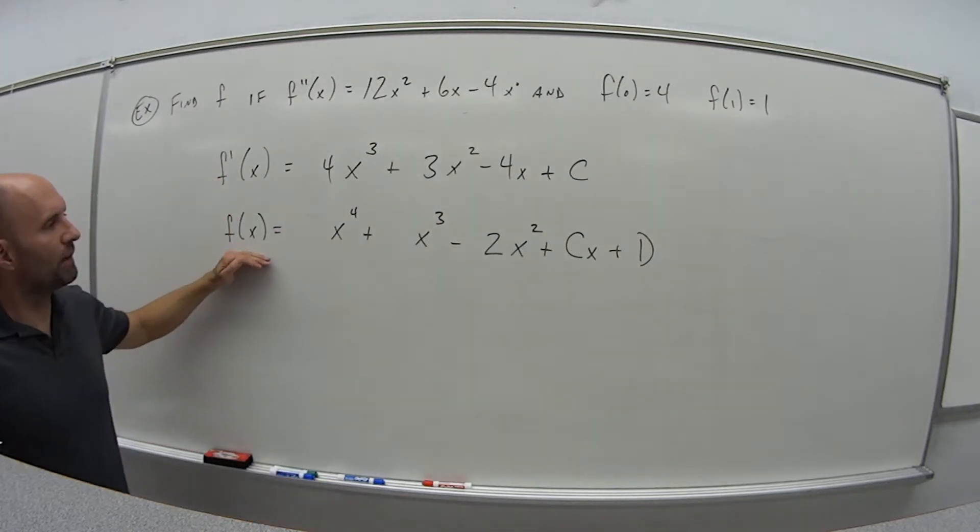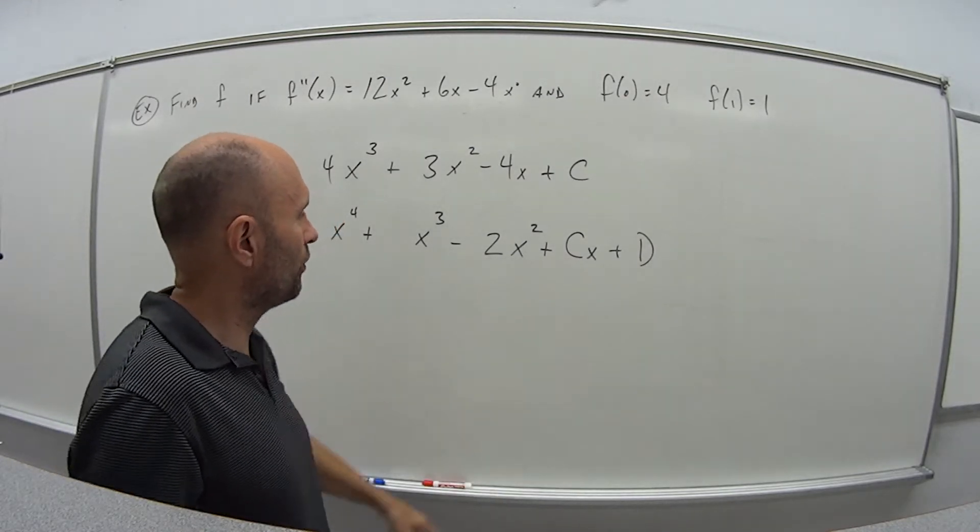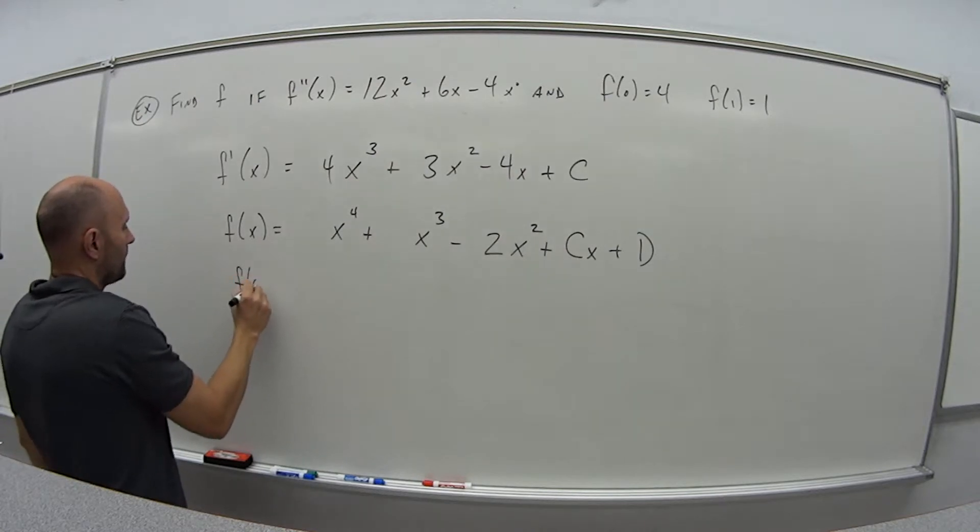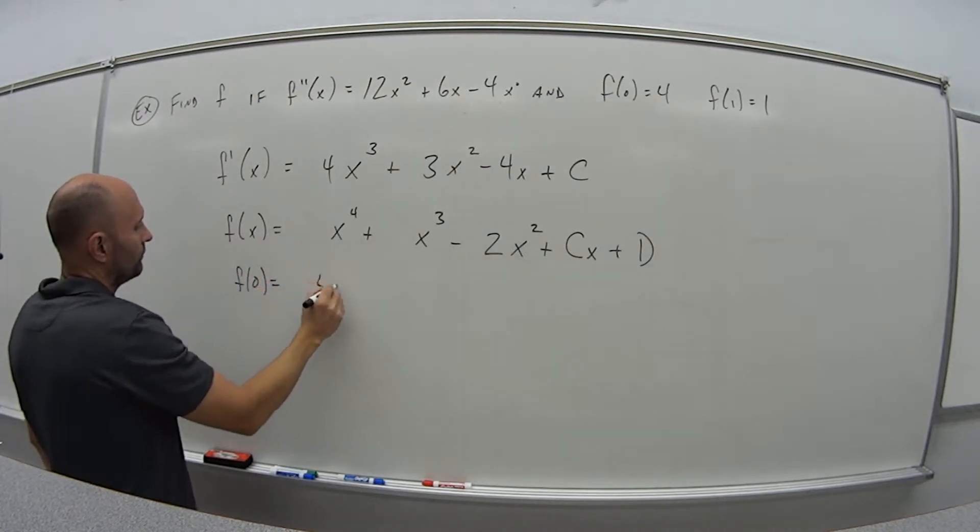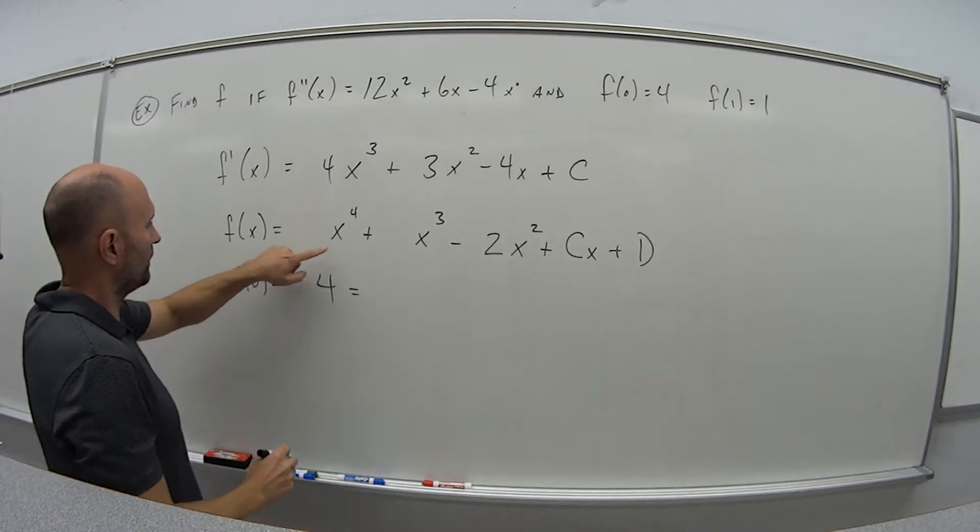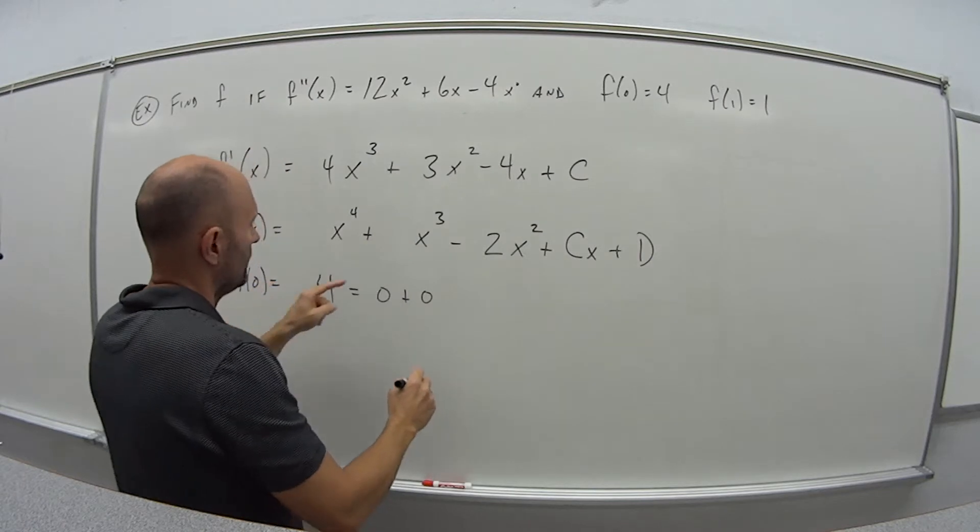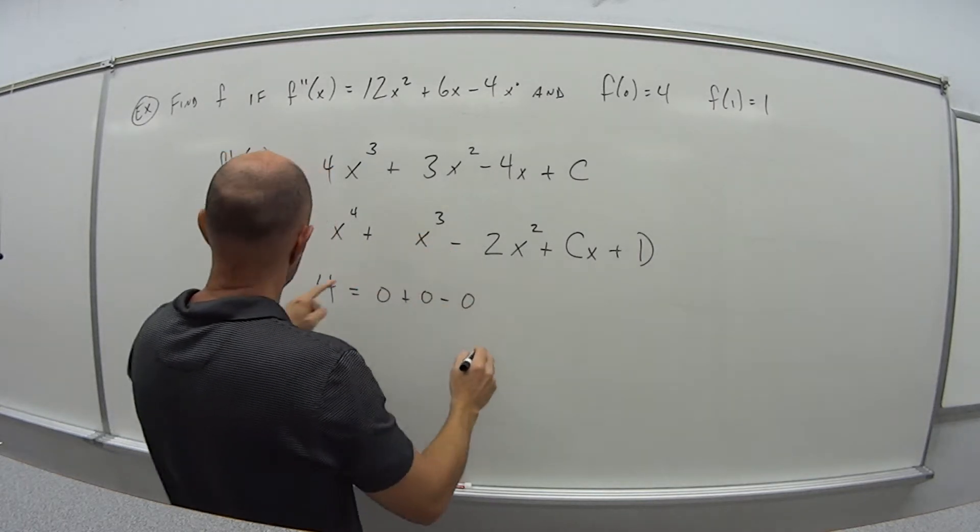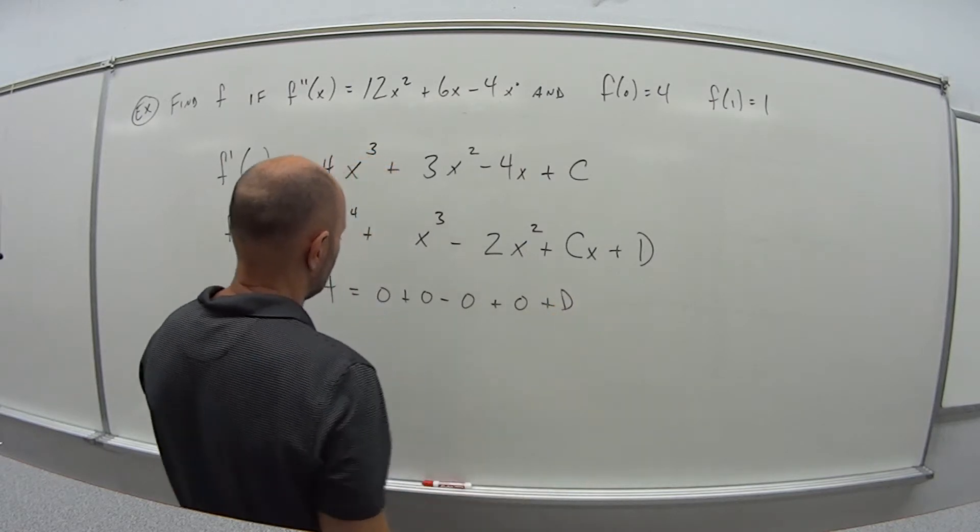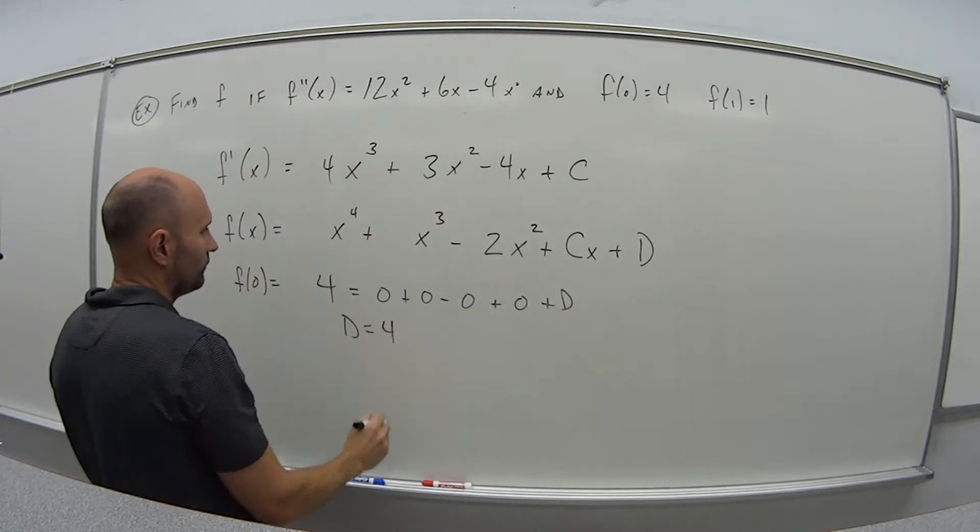So here is my base function, with two variables I need to solve for. So first off, it tells us f of 0 is equal to 4. So that means I plug 0 in everywhere here. So I get 0, plus 0, minus 0, plus 0, plus d. So that means d is equal to 4.